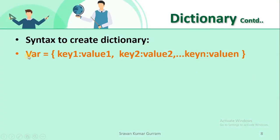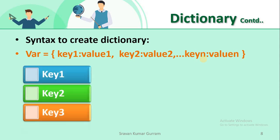The syntax to create a dictionary: dictionary variable name, assignment operator, then within curly brackets write key1 colon value1, key2 colon value2, and so on. However many key-value pairs you want to maintain in your dictionary object, that many you can create.